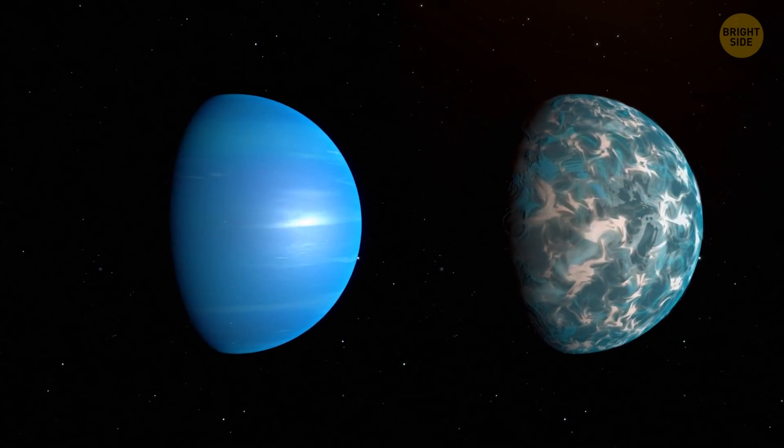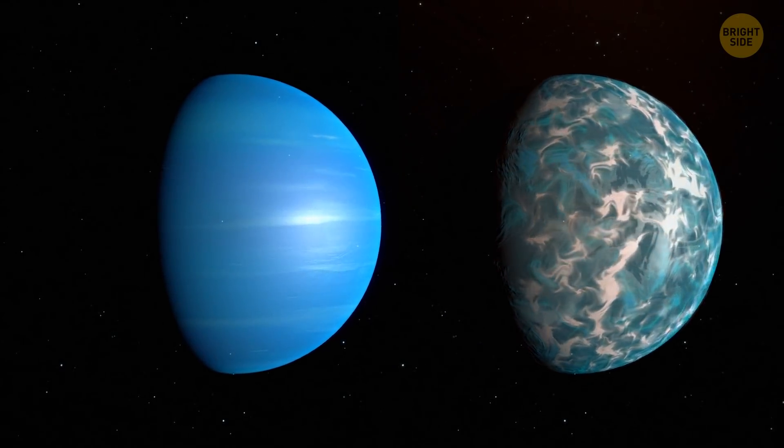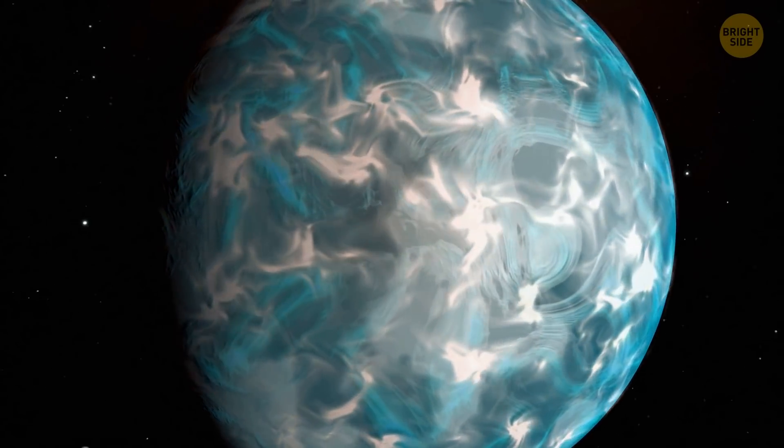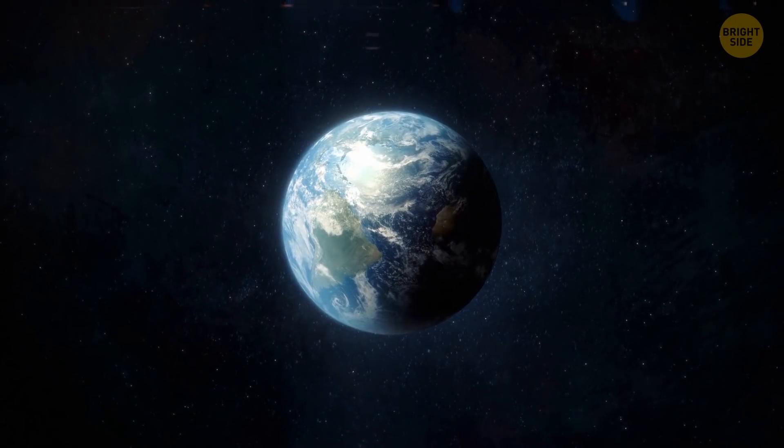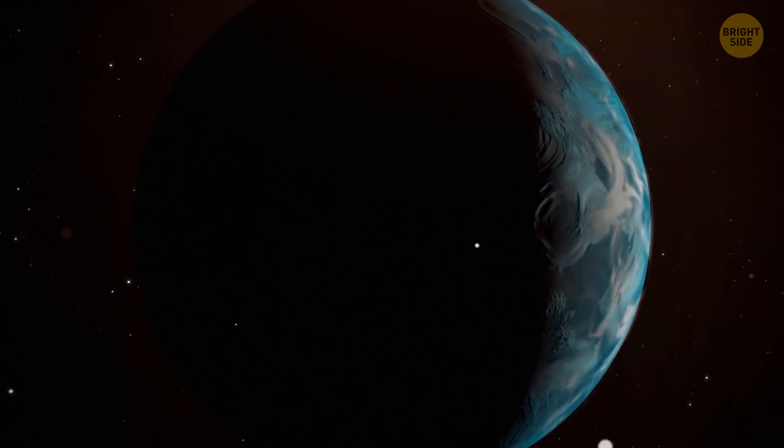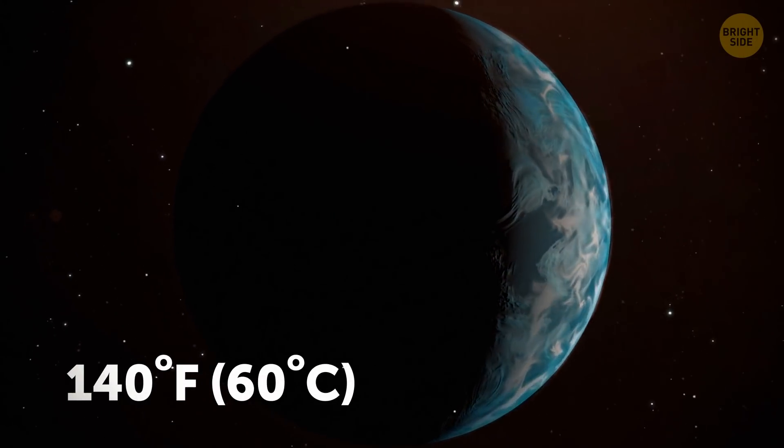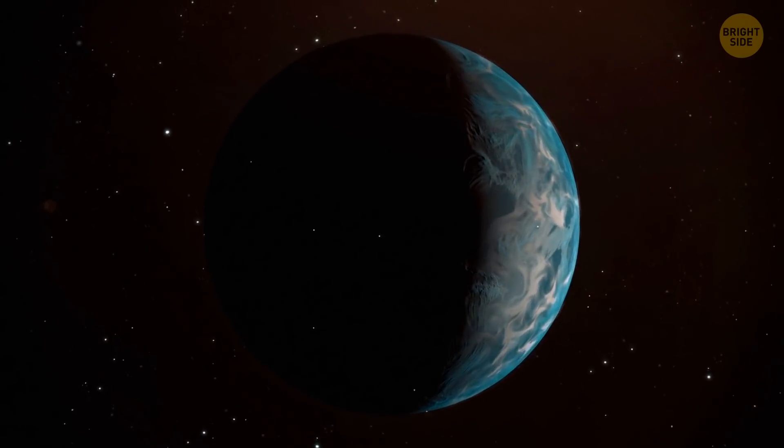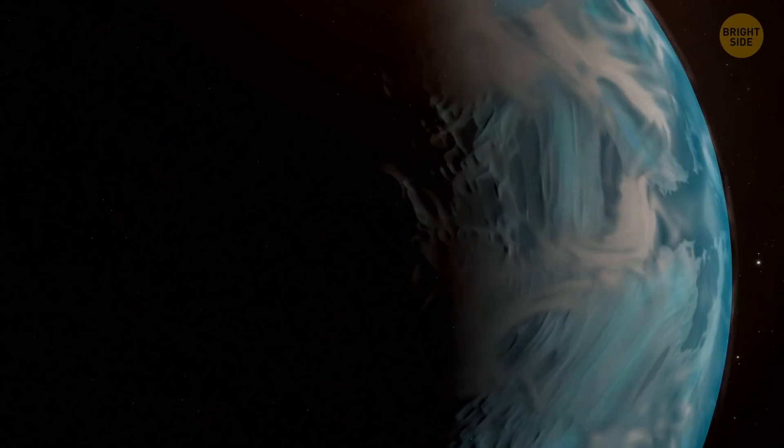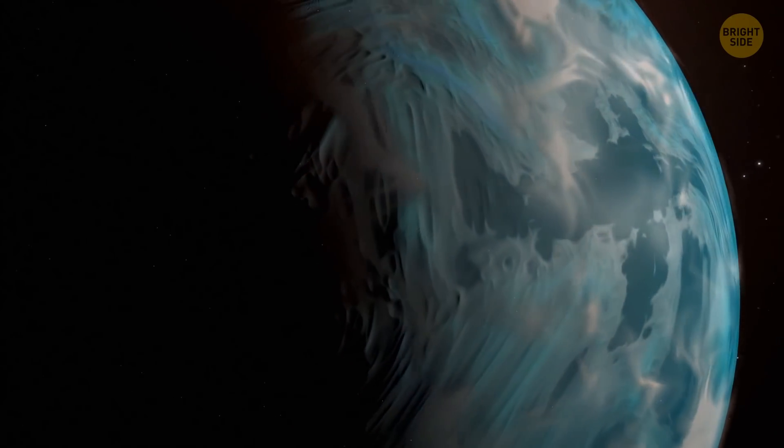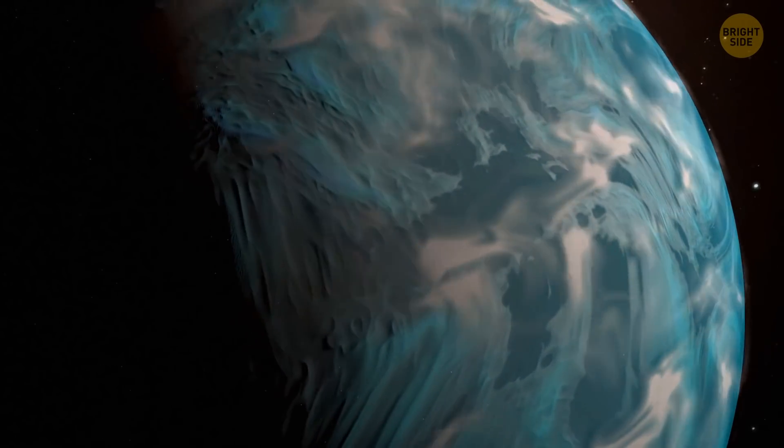This exoplanet has a size similar to Neptune. It's also less dense, which means it's mostly made of gas, unlike Earth, which is made of rock. The average temperature there is 140 degrees, which makes it one of the coolest small exoplanets we've ever discovered. And the cooler the exoplanet is, the bigger the chance we'll find clouds in its atmosphere.